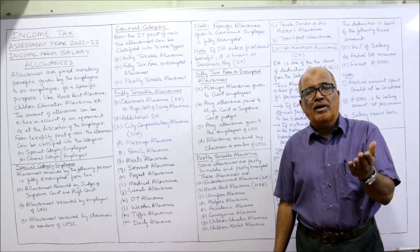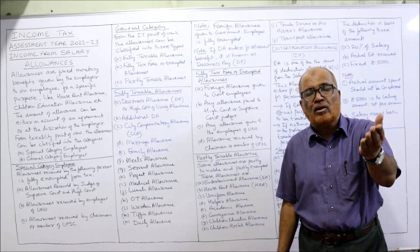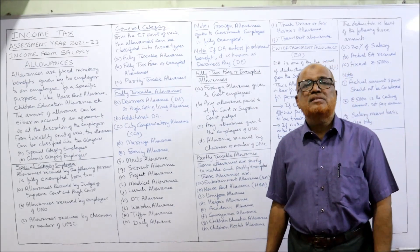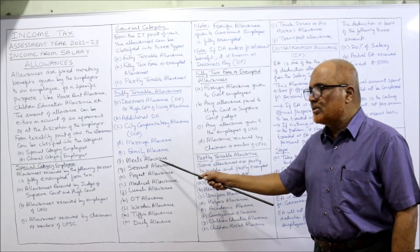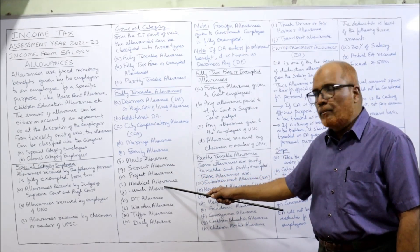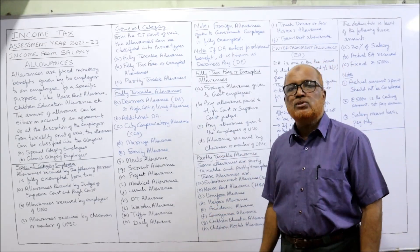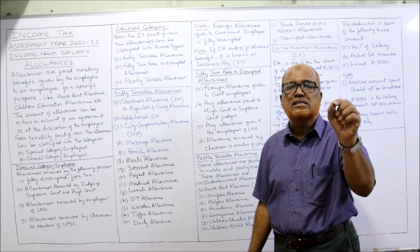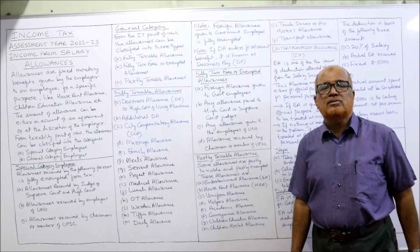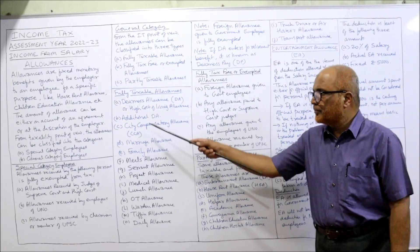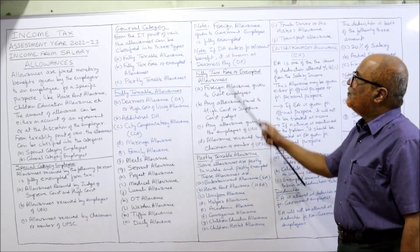City Compensatory Allowance (CCA) is given when an employee is posted in a metropolitan city where the cost of living, rental charges, and food charges are high — fully taxable. Other fully taxable allowances include: marriage allowance, family allowance, meal allowance, servant allowance, project allowance, medical allowance, lunch allowance, overtime (OT) allowance, water allowance, stipend allowance, and daily allowance. In exams you may be asked to give five examples of fully taxable allowances.